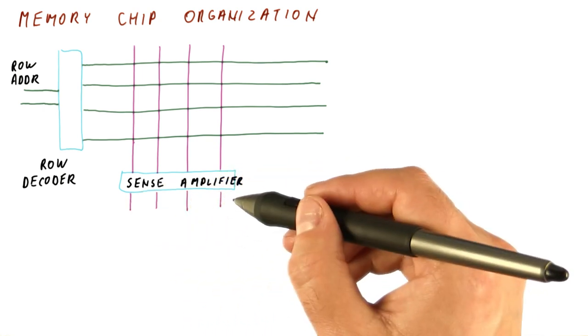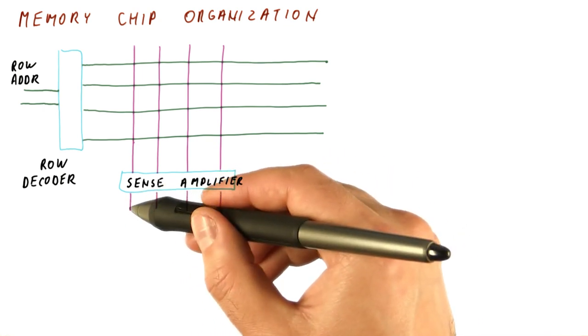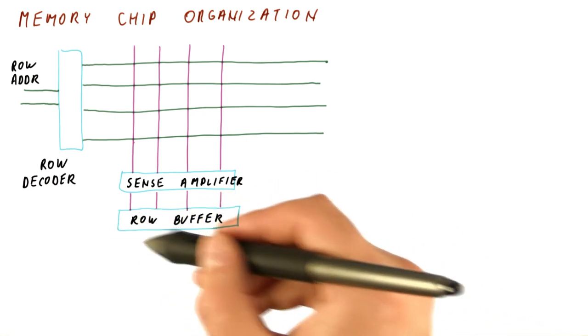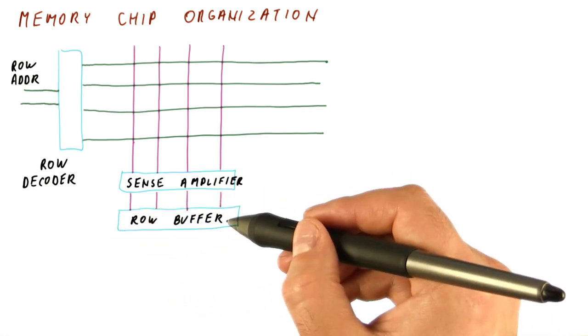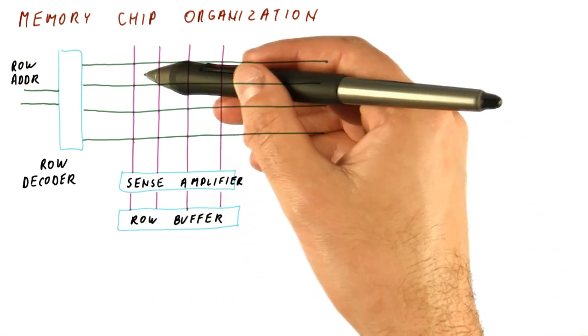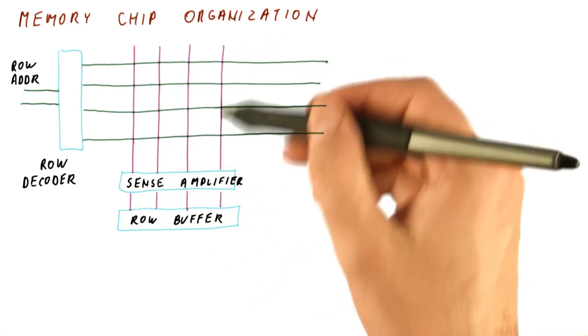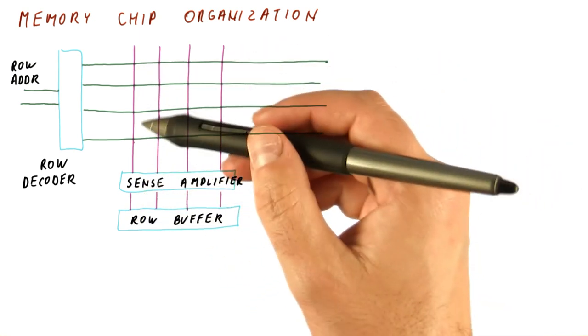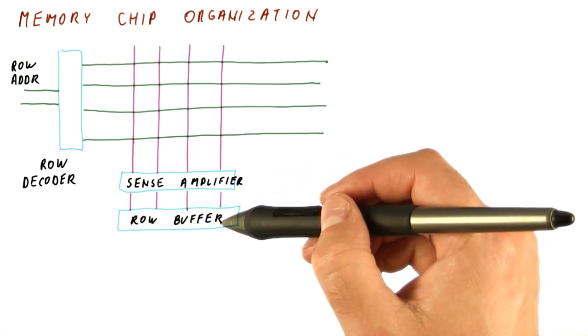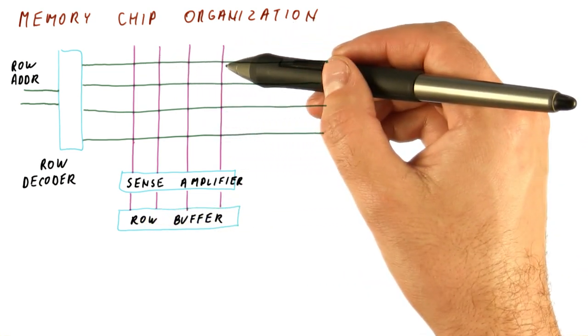The signals that are produced by the sense amplifier, which are now correctly one or zero bits, go to a storage element called the row buffer. The row buffer stores the correct values that we read from the whole row of cells. So in this case, the row buffer will contain four bits, because that's how many bits are there in the row.